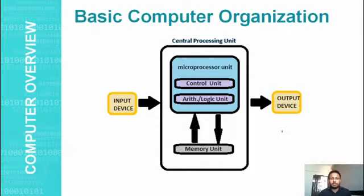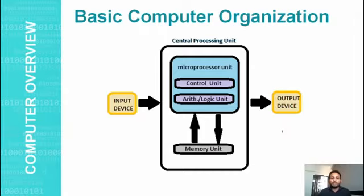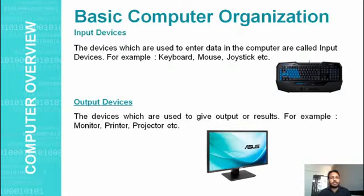Input devices send the data to the CPU. The CPU processes it and sends it to the output device, which then displays the result. The CPU has three major parts: CU — Control Unit, ALU — Arithmetic and Logical Unit, and MU — Memory Unit. The next topic is input devices.